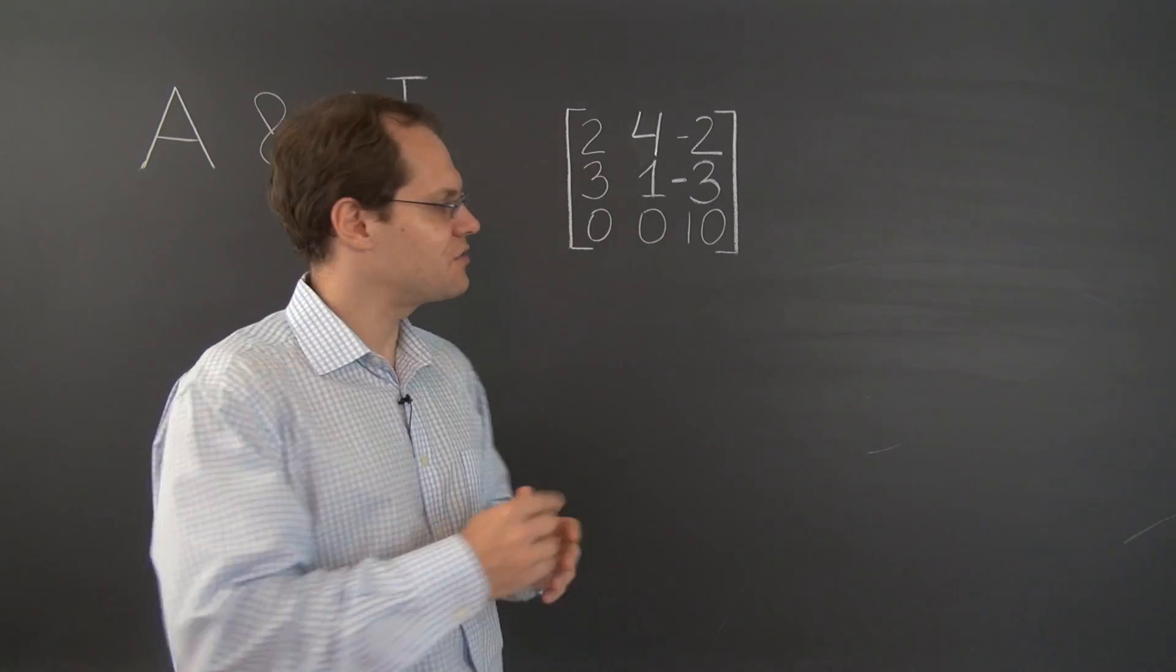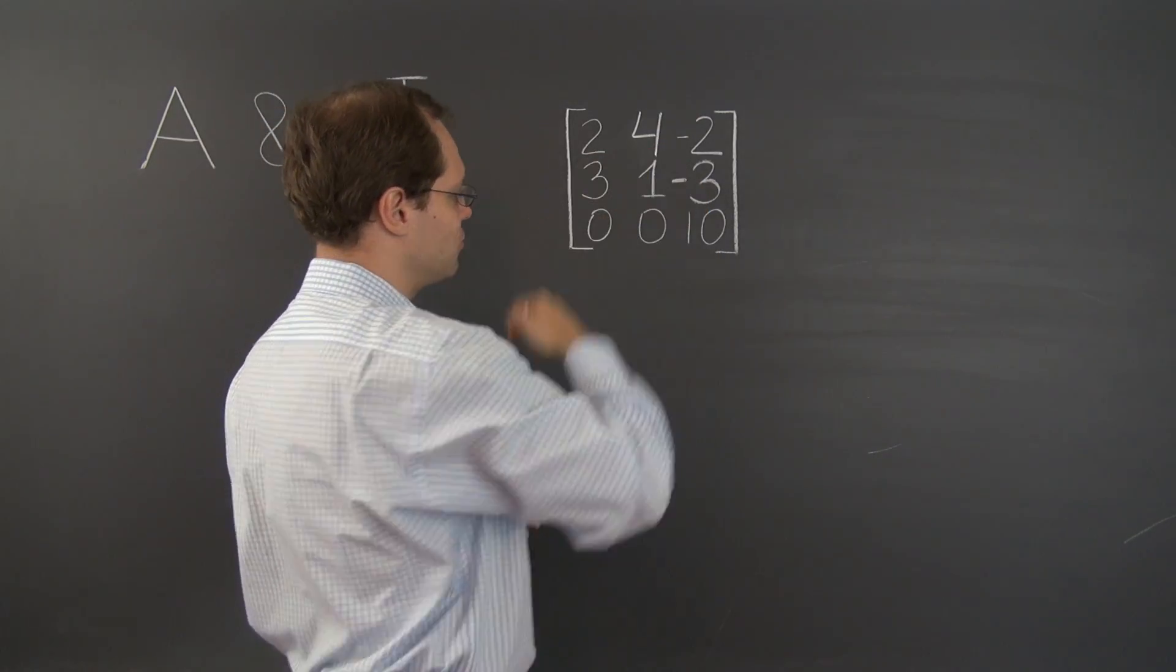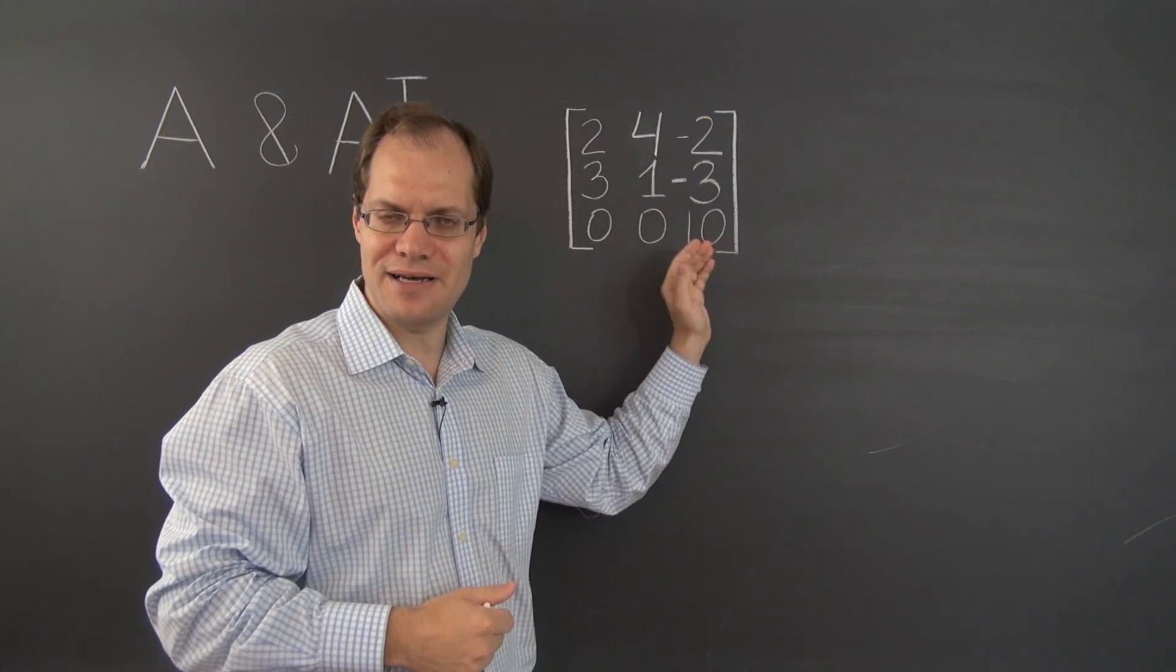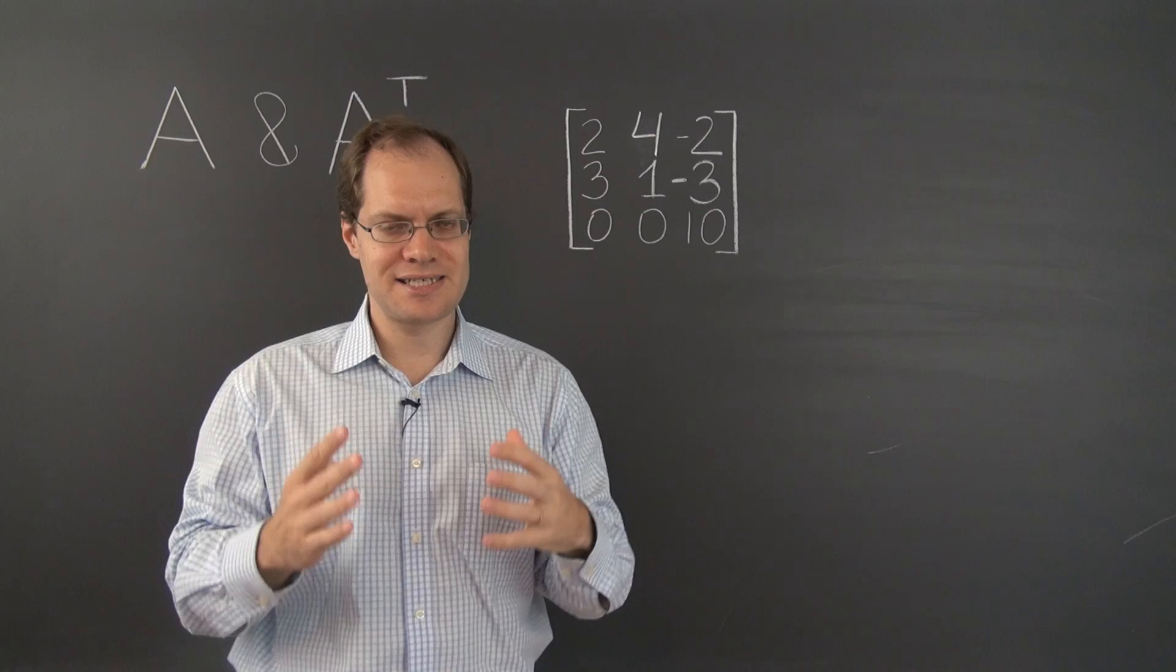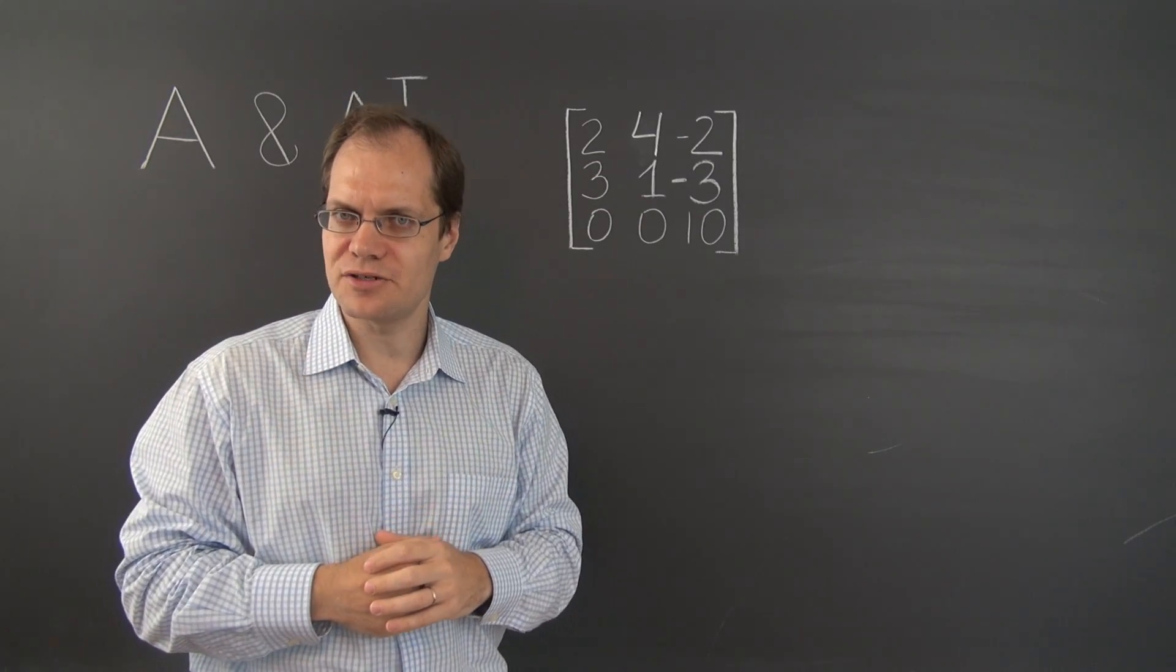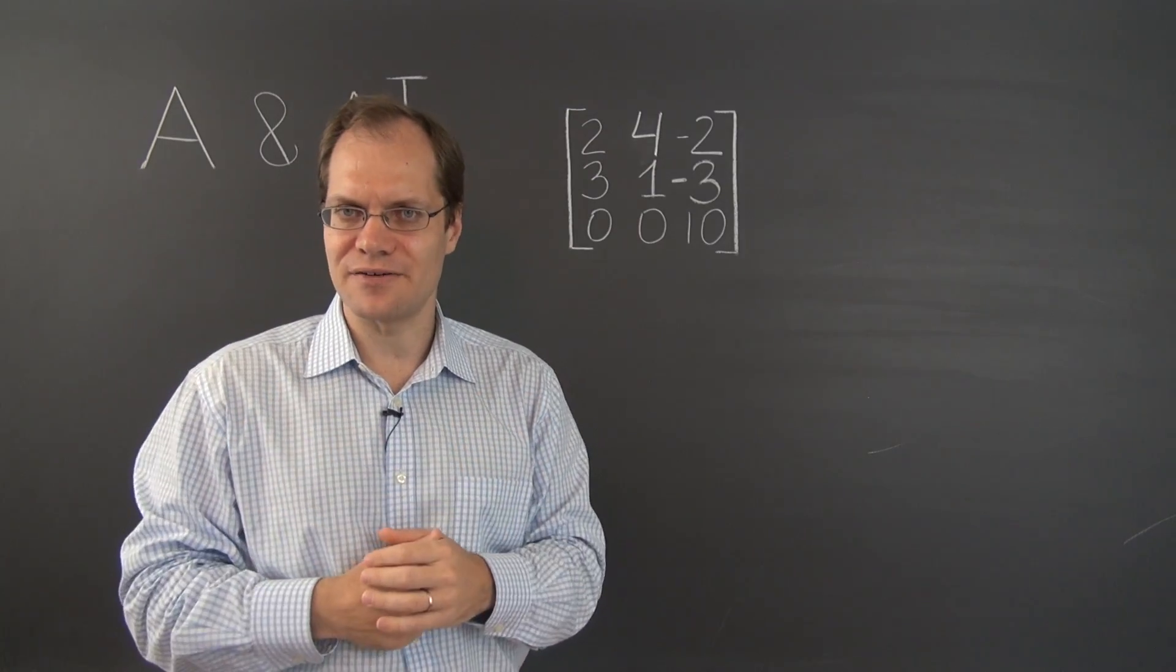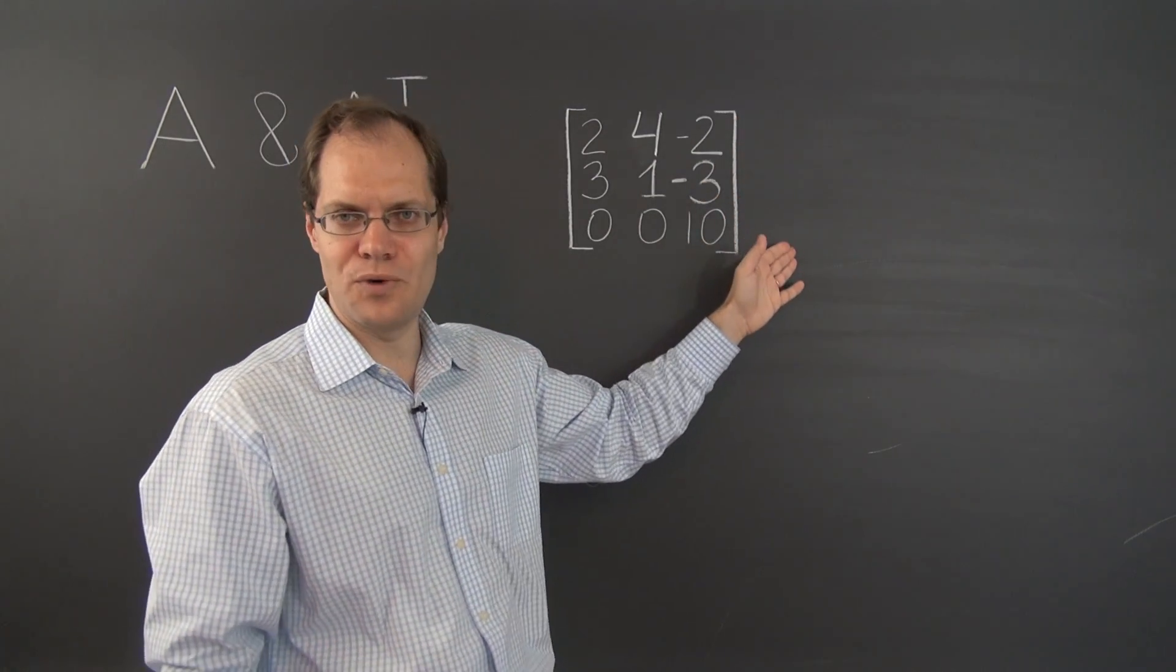Well, it's helpful because if we were to consider the transpose of this matrix, then 10 would be alone in its column and in the diagonal position. And that would mean that 10 is an eigenvalue of that matrix and we would also know the corresponding eigenvector. It would be 0, 0, 1.